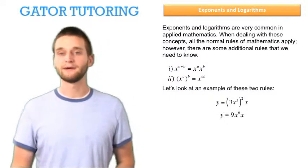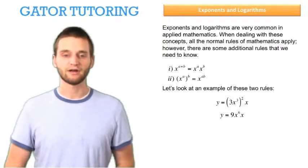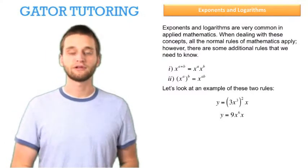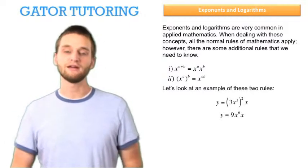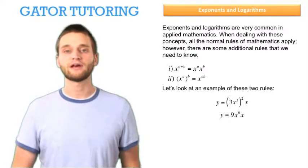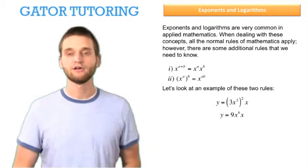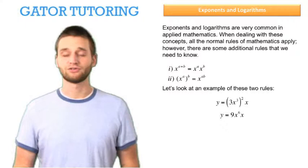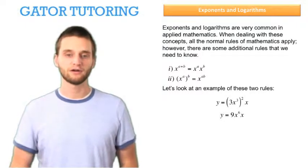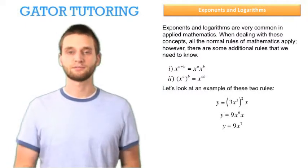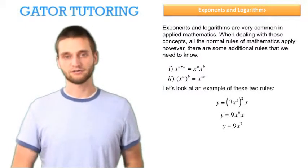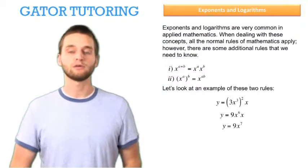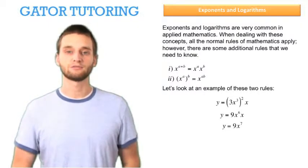And this is multiplied by x on the outside. From our first rule, we know that x raised to the a times x raised to the b is the same thing as x raised to the a plus b. So x raised to the 6 times x, which is x raised to the 1, is x raised to the 6 plus 1, or x raised to the 7. And so this simplifies down to y equals 9x raised to the 7.